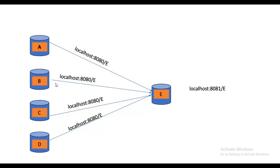Then we are not able to communicate because the service URL got changed. We cannot communicate to service E from A, B, C, or D. We need to manually change the configurations or port numbers in our services and restart them. But if in real time you have hundreds of applications, how much time will it take? It will be a big mess. For solving this problem we have Eureka Server, also known as service registry and discovery.